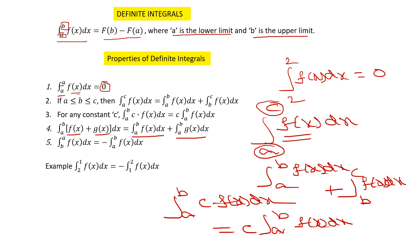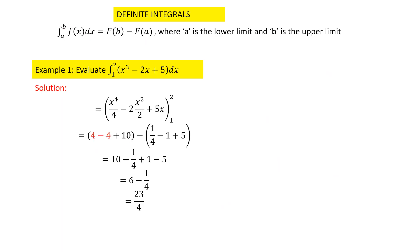Sometimes we have the integral from b to a of f(x) dx. This can be changed to minus of the integral from a to b of f(x) dx. For example, the integral from 2 to 1 of f(x) dx equals minus times the integral from 1 to 2 of f(x) dx — the upper limit and lower limit are swapped.